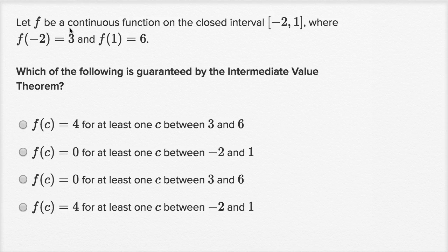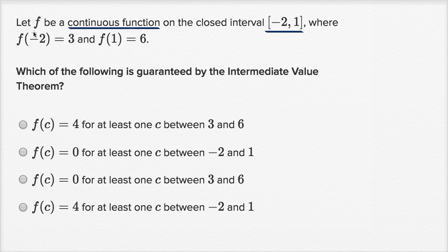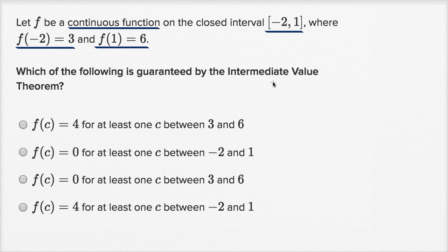Let f be a continuous function on the closed interval from negative two to one, where f of negative two is equal to three, and f of one is equal to six. Which of the following is guaranteed by the intermediate value theorem?